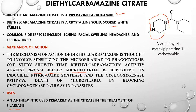Regarding the mechanism of action of diethylcarbamazine: it blocks the cyclooxygenase pathway. The parasite has its own cyclooxygenase pathway which it uses to suppress the host's immune system so it can penetrate. Diethylcarbamazine blocks this cyclooxygenase pathway, preventing the parasite from penetrating and suppressing the immune system, leading to parasite death.